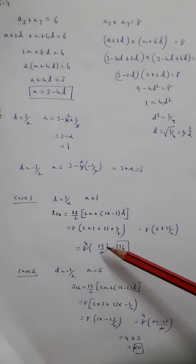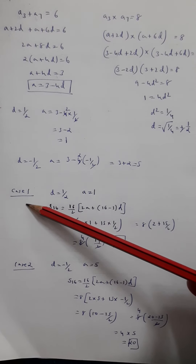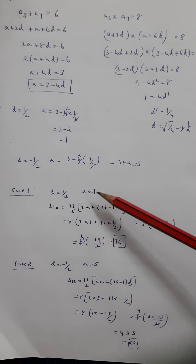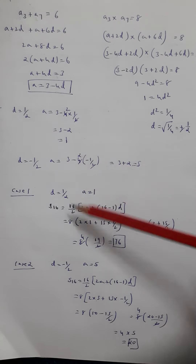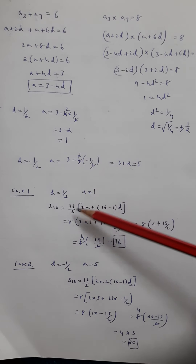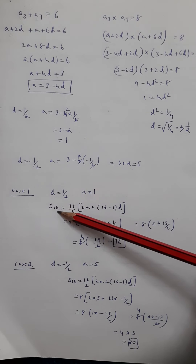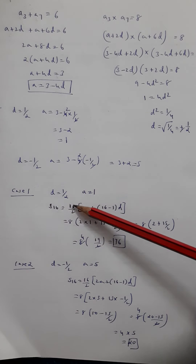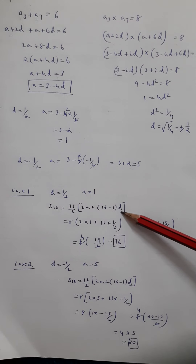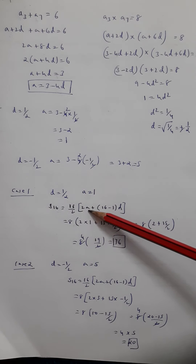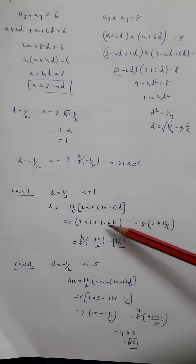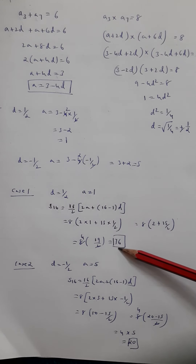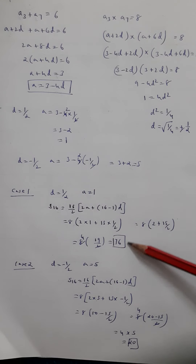Now we solve both cases individually. Case 1: d equals 1/2 and a equals 1. The question asks for the sum of the first 16 terms, S16. Using the formula S_n equals n/2 times (2a plus (n minus 1)d), with n equals 16, a equals 1, and d equals 1/2, we solve to get S16 equals 76. But don't stop here — we also have Case 2.